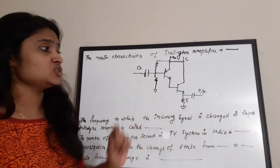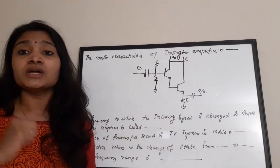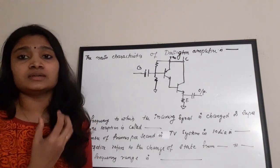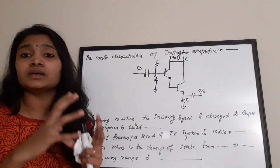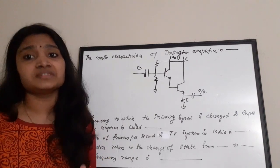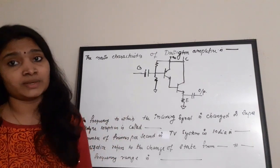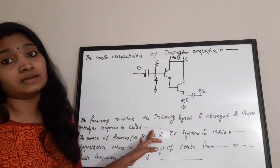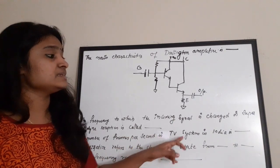The frequency to which the incoming signal is changed in a superheterodyne receiver is called the intermediate frequency (IF). In a superheterodyne receiver, the incoming high-frequency signal is first converted in the mixer to an intermediate frequency, and then converted to the audio range frequency for reception. The correct answer is: intermediate frequency.